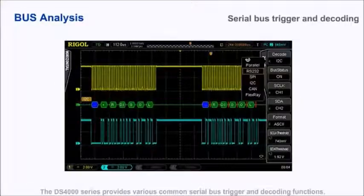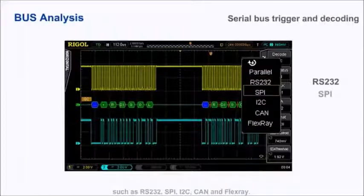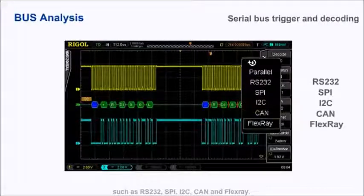The DS4000 series provides various common serial bus trigger and decoding functions such as RS-232, SPI, I2C, CAN, and FlexRay.